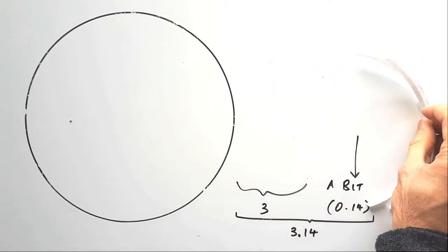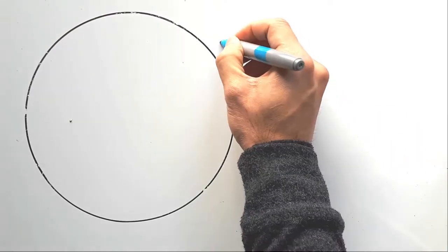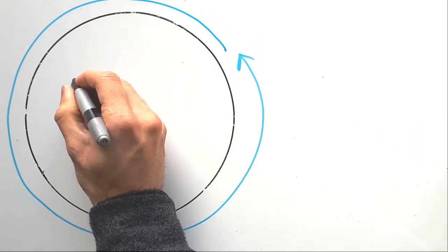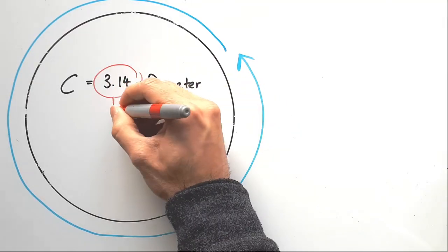You can try this out with other sizes, and you will reach the same conclusion. So its circumference is always 3.14 times the diameter. And that is pi.